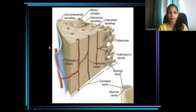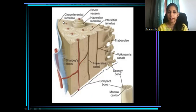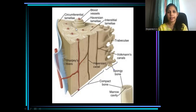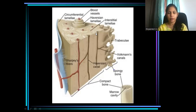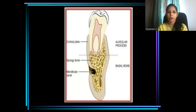Within the cortical bone, we have numerous osteones. These several osteones are surrounded by circumferential lamellae, and in between the concentric lamellae or between these osteones, what we have is interstitial lamellae. This is how compact bone is seen histopathologically — these are the structures present within a cortical bone.